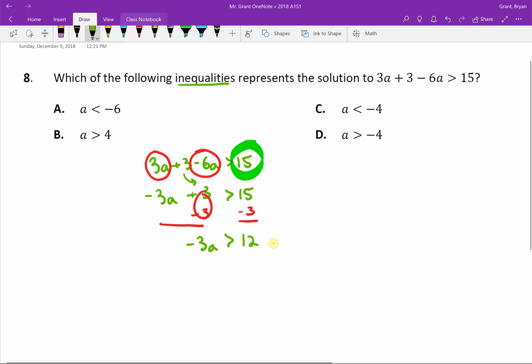And then last but not least the negative 3 is multiplying by a, so we're going to undo that by division, and we end up with a on the left side, and 12 divided by negative 3 is negative 4 on the right side.